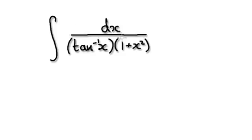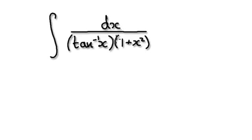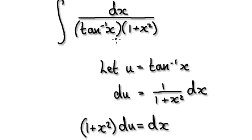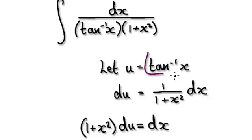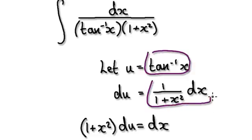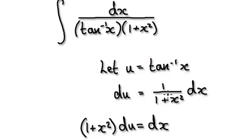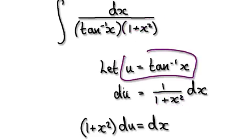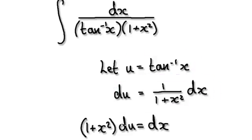Try to keep an eye out on something being the derivative of another thing within that function. In this case, if you let u to be this thing here, then when you differentiate this, it will give you this thing here. Notice that this thing will cancel out with this thing here. So let u equals this thing, then du equals this thing, and then dx equals this thing here.